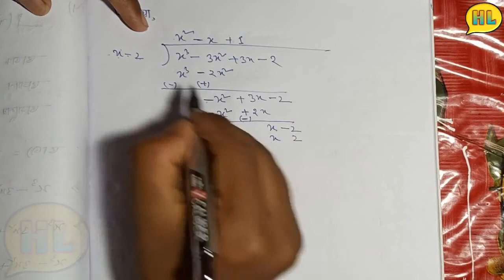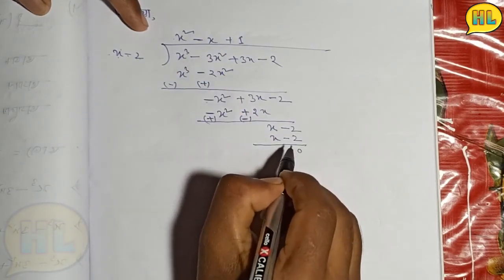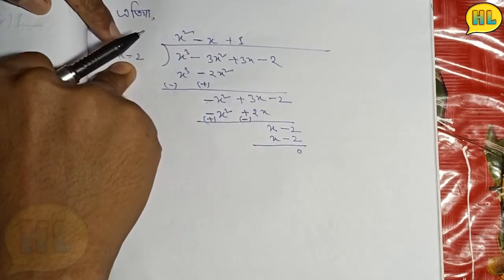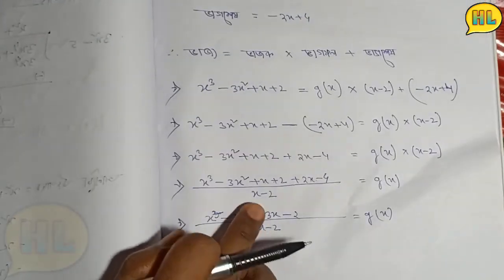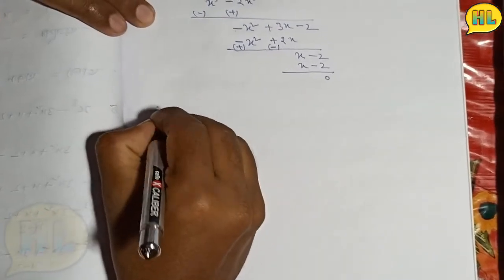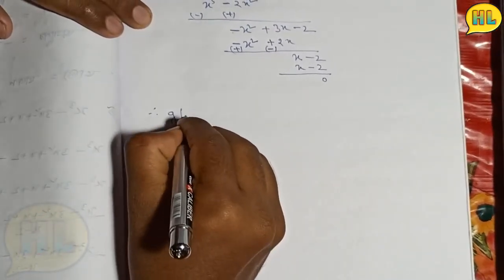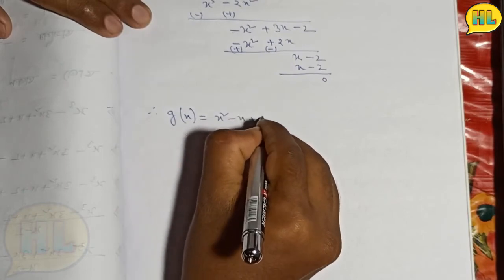Plus plus plus plus plus, minus plus minus, so we get zero. The final result is g(x) equals x square minus x plus 1.